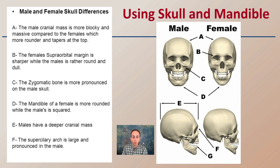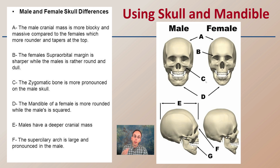Looking at the skull and the mandible, for example — looking at a male and female skull — if you look at them quickly, you might say they're basically the same. What we want to look at is some of the details. For the male, the cranial mass is more blocky and tends to be more massive than females, which are rounder and taper towards the top. The female has a thinner appearance overall, and that tends to be more evident with the zygomatic bone, which is more pronounced in the male skull.